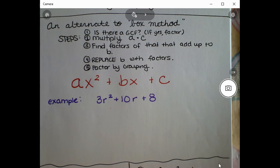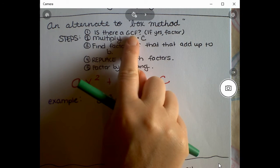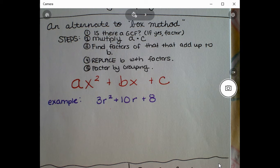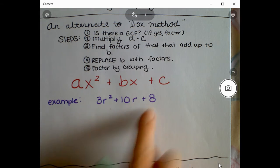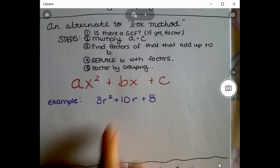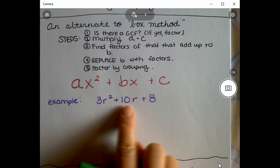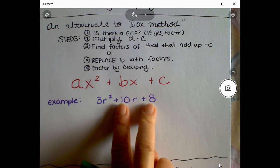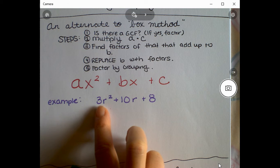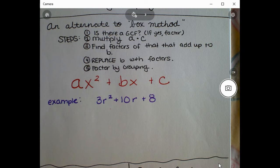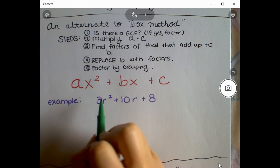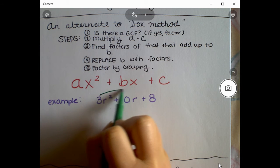The first step is to look and see if there is a GCF — a greatest common factor — meaning all the terms could be divided by the same number. That is not true here: these two terms you could divide by two, but you can't divide three by two, so there is no GCF.